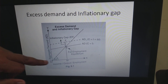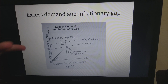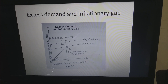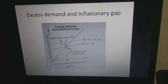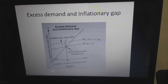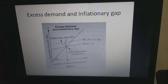When there is already full employment, there is no unused capacity — resources are fully employed. This situation means the aggregate demand is in excess of the aggregate demand required to give full employment output.